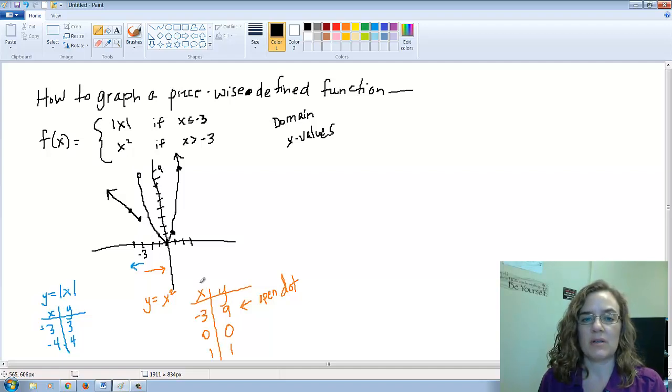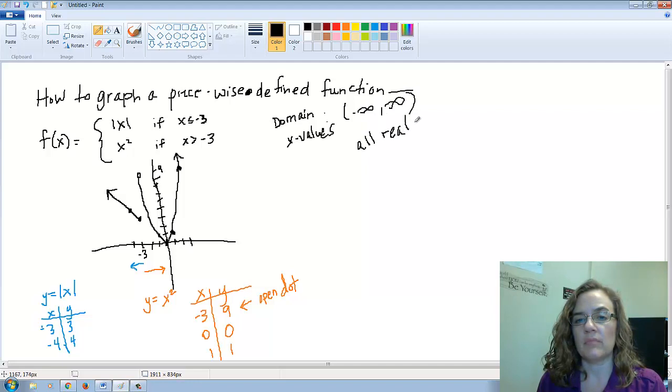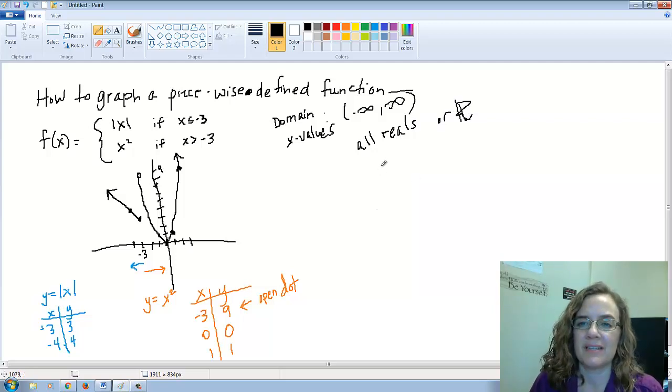Everything exists along the x axis, so our domain for this function is going to be negative infinity to infinity, which means all reals. You could also write that funny R on your paper, that's our symbol for all real numbers in math.